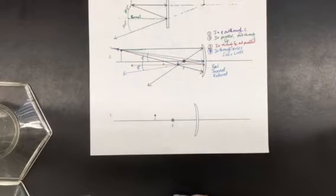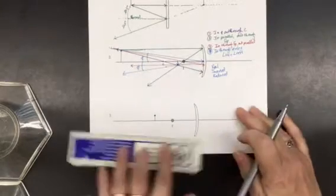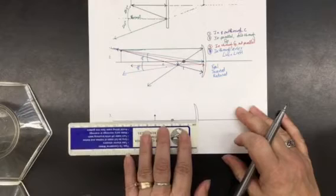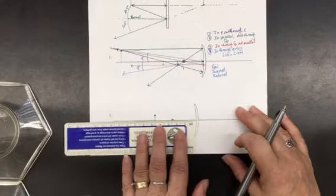Alright, here's the third one. So, same rays, we still have to draw in our focal point or our center of curvature. So we're going to measure this guy, and I get 2.9 centimeters.